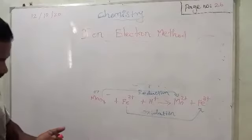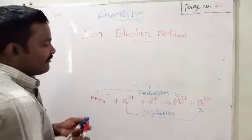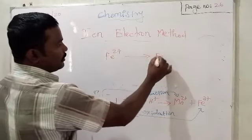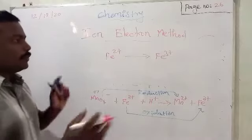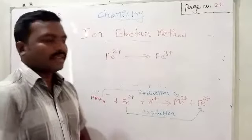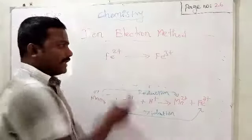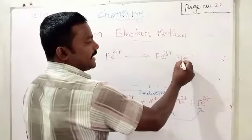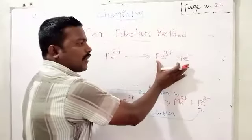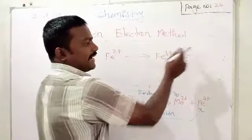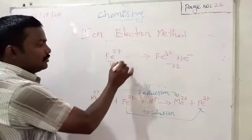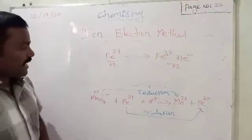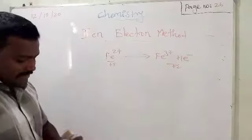Now we split the oxidation and reduction reactions separately. Write the oxidation reaction: Fe²⁺ is converted into Fe³⁺. How do you balance this equation? Here left side is +2 and right side is +3. You add one electron on the product side — charge becomes (3−1) = +2. Now both sides have +2; charges are balanced. Consider this equation 1.